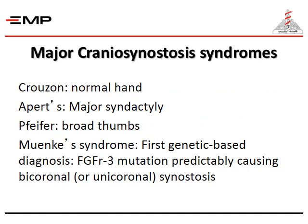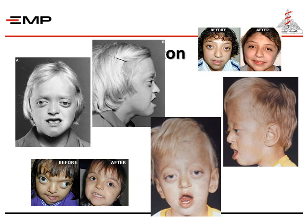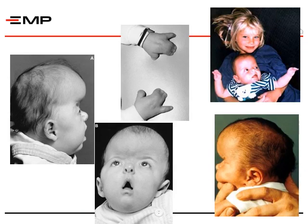Major craniosynostotic syndromes include: Crouzon syndrome with normal hands, Apert syndrome with major syndactyly, Pfeiffer syndrome with broad thumbs, and Muenke syndrome with a genetic basis. The mutation predictably causes coronal or unicoronal synostosis. Photos show patients with craniosynostosis pre- and post-operatively, as well as patients with different types of craniosynostosis and associated hand syndromes.